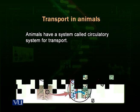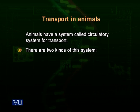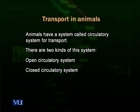Now we come to animals. Animals have a system called the circulatory system for transport. Animals are comparatively more complex than all other life forms. Because they are complex, they have to face more challenges. They need a more efficient and more coordinated transport system. Animals have evolved two types of transport systems: an open circulatory system and a closed circulatory system.